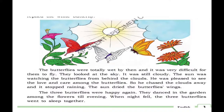The butterflies were totally wet by then and it was very difficult for them to fly. They looked at the sky — it was still cloudy. The sun was watching the butterflies from behind the clouds. He was pleased to see the love and care among the butterflies. So he chased the clouds away and it stopped raining. The sun dried the butterflies' wings. The three butterflies were happy again. They danced in the garden among the flowers till evening. When night fell, the three butterflies went to sleep together.